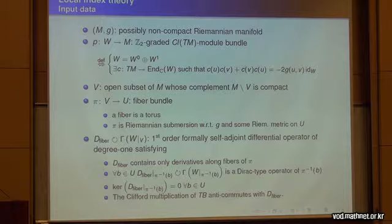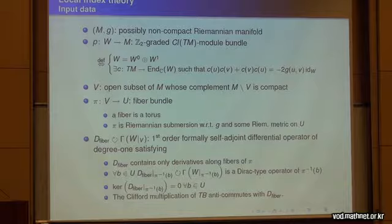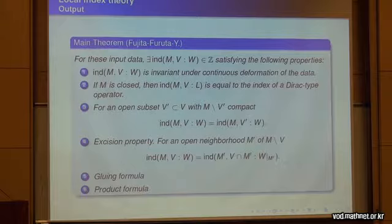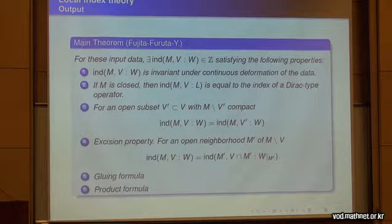So the input data are these five things. From the input data, we obtain the following output: given this input data, there exists an integer satisfying the following six properties, which we call the local index. The first property is deformation invariance: the local index is invariant under continuous deformation of the data.